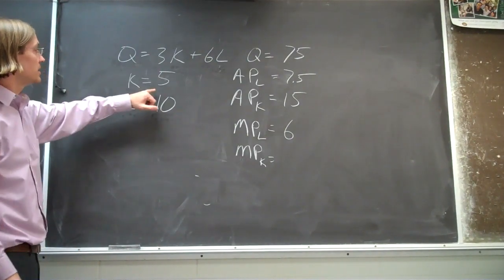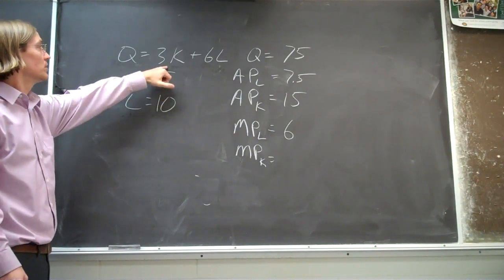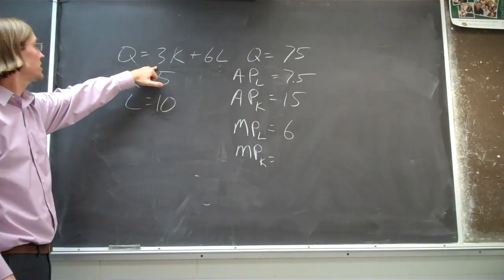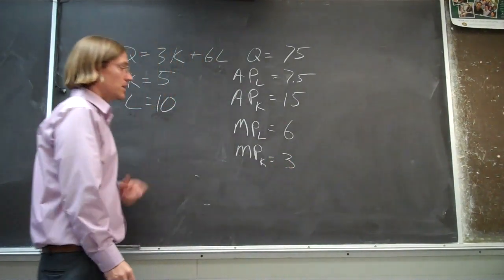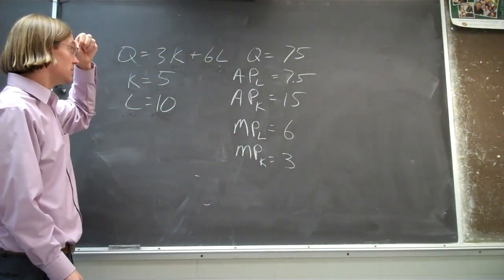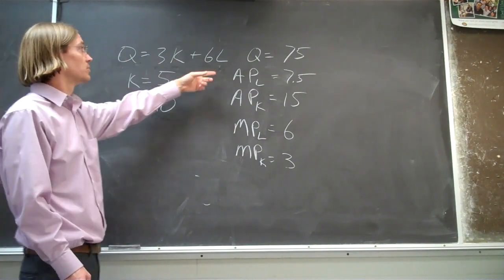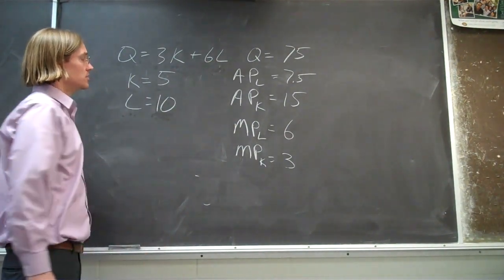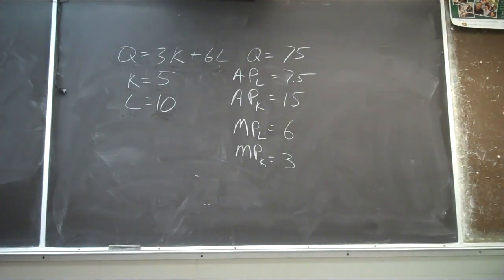With capital, same idea. If you add one more unit of capital, you're going to get that additional unit multiplied by the coefficient three, so you're going to get three more units of output. You can also use calculus to do that — take the derivative with respect to capital and Q is going to equal three, and take the derivative with respect to labor and Q will equal six. But you don't necessarily have to use calculus to solve this one.